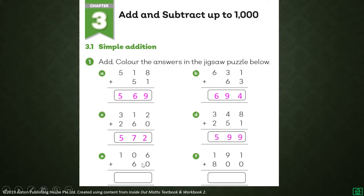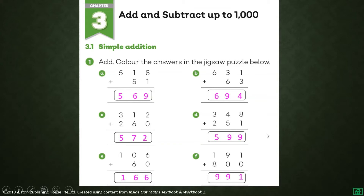Letter E: six plus zero, zero plus six, and one plus zero equals — one hundred sixty-six. Next, letter F: one plus zero, nine plus zero, and one plus eight equals.